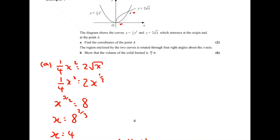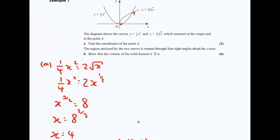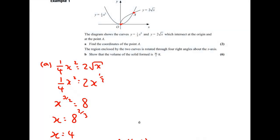Part B says the region enclosed by the two curves is rotated through four right angles — that's 360 degrees — on the x-axis. The question wants us to show that the volume is 960π/5. We've got Autograph here to show what this volume will look like: it's the area between the two curves rotated around the x-axis.